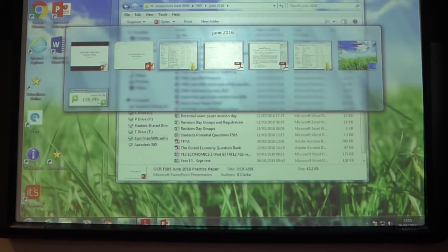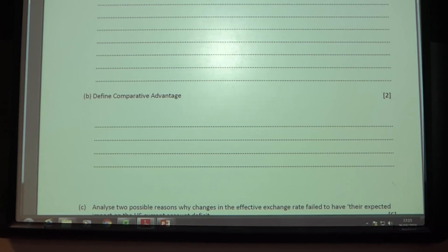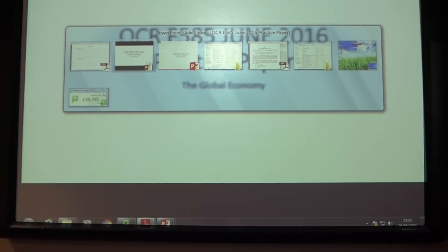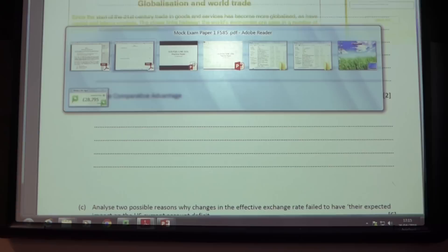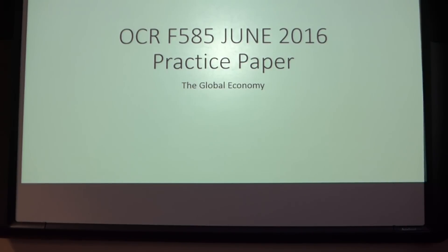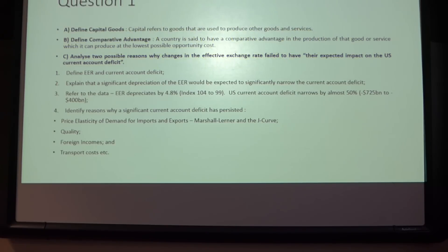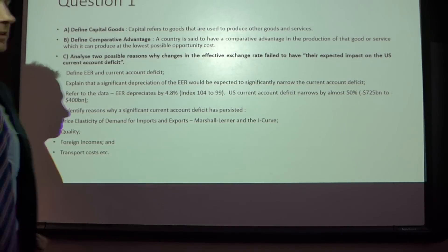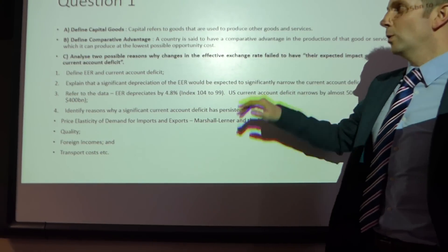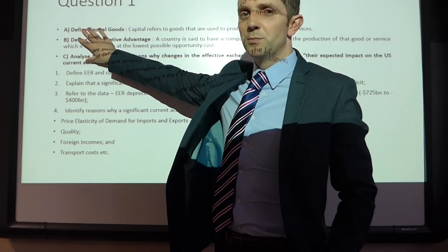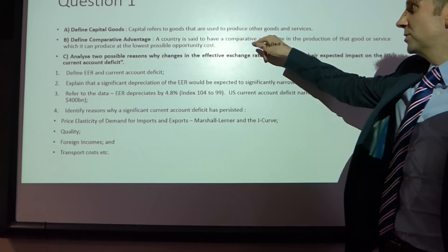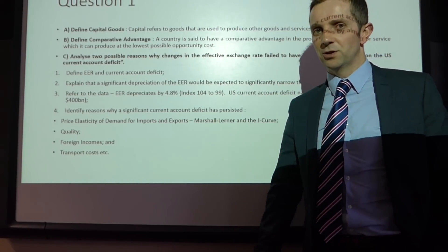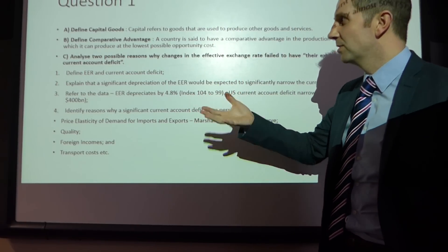So this is the paper I'm talking about, and I'm going to go through 1A, 1B, 1C, and 1D in relation to the extract material. Question 1A was quite simple and straightforward. Define capital goods. Capital refers to goods that are used to produce other goods and services, and you could give one or two examples. It's only a two-by-two mark question, so very straightforward.